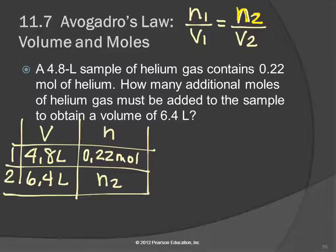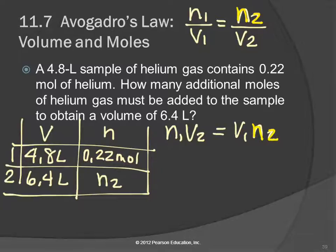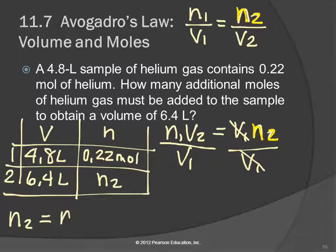I'm going to cross-multiply: N1 times V2 is equal to V1 times N2. Still trying to isolate N2 — to get it by itself, I divide by V1 on both sides, because then V1 will cancel out. Now I have my equation: N2 equals N1 times V2 over V1.